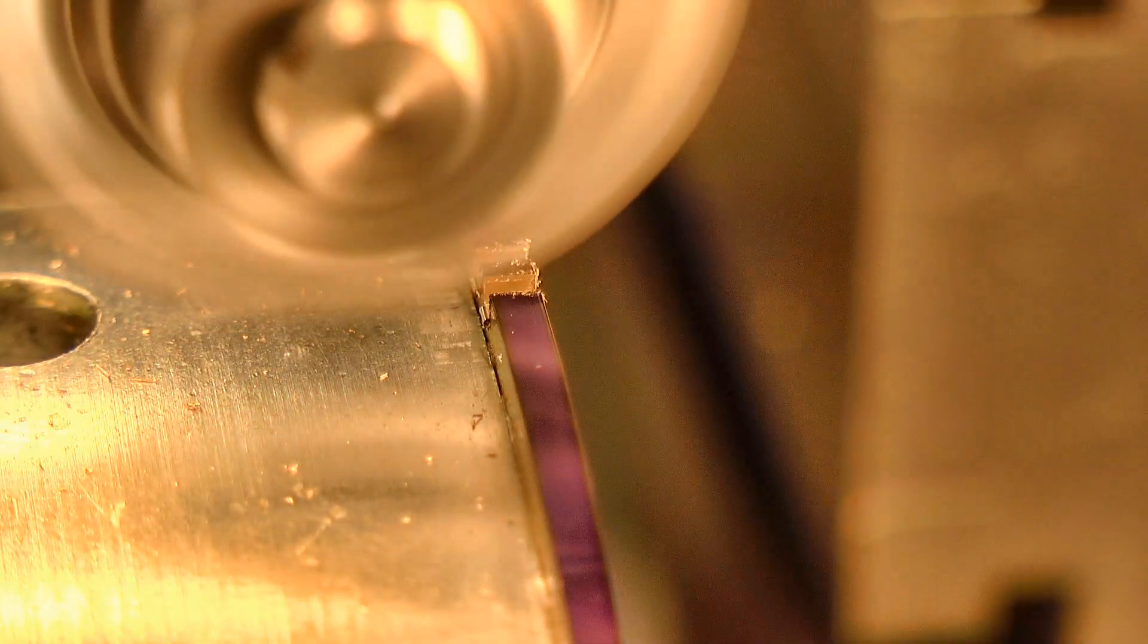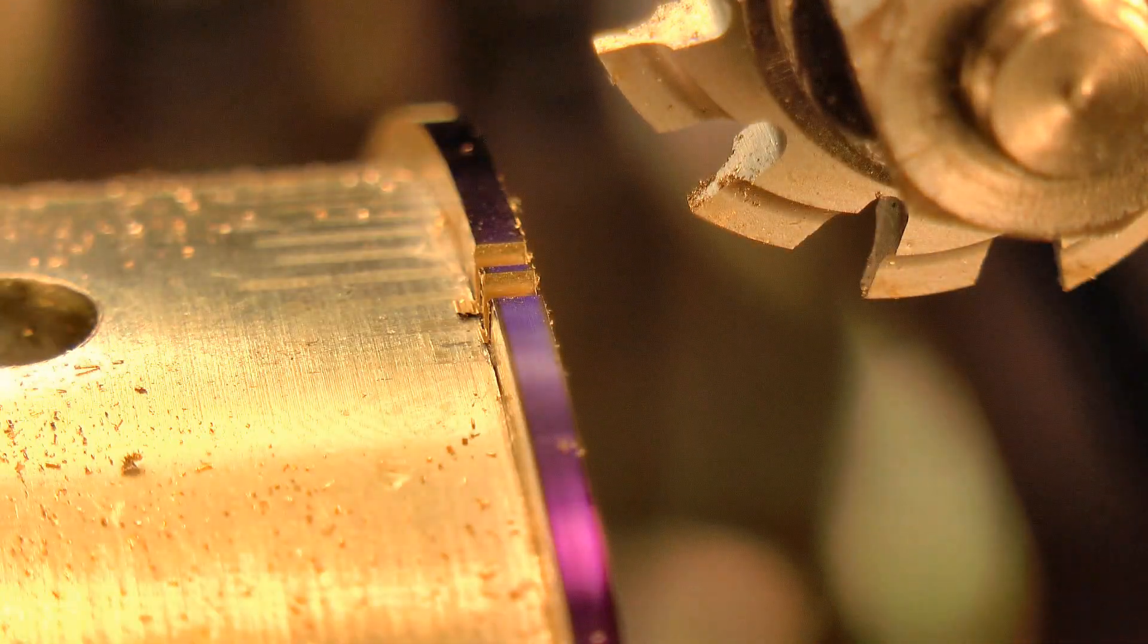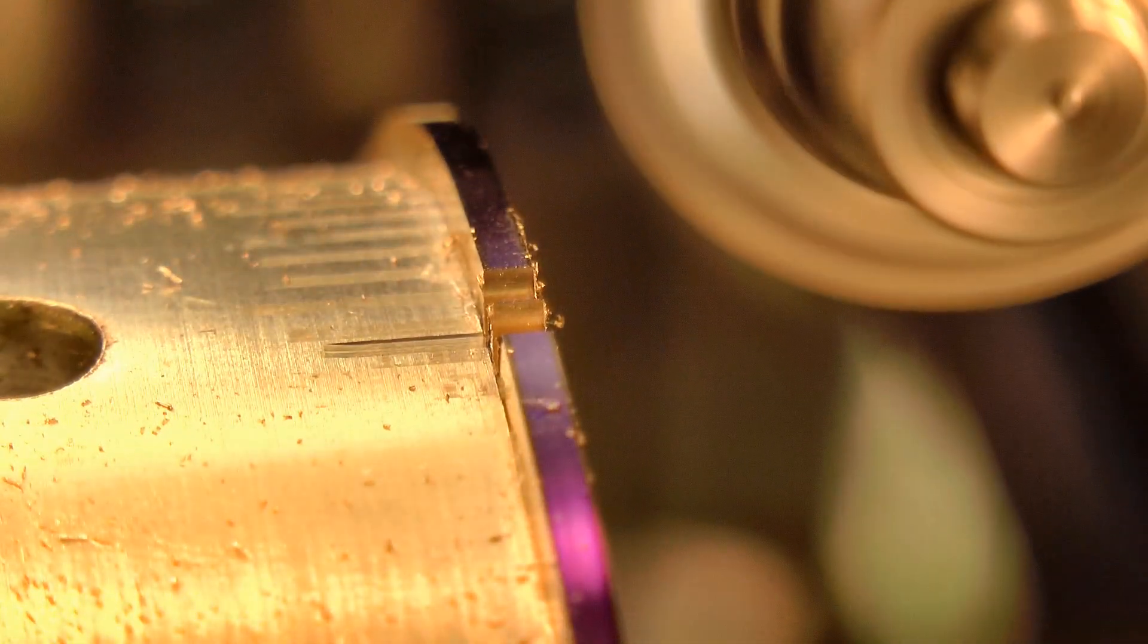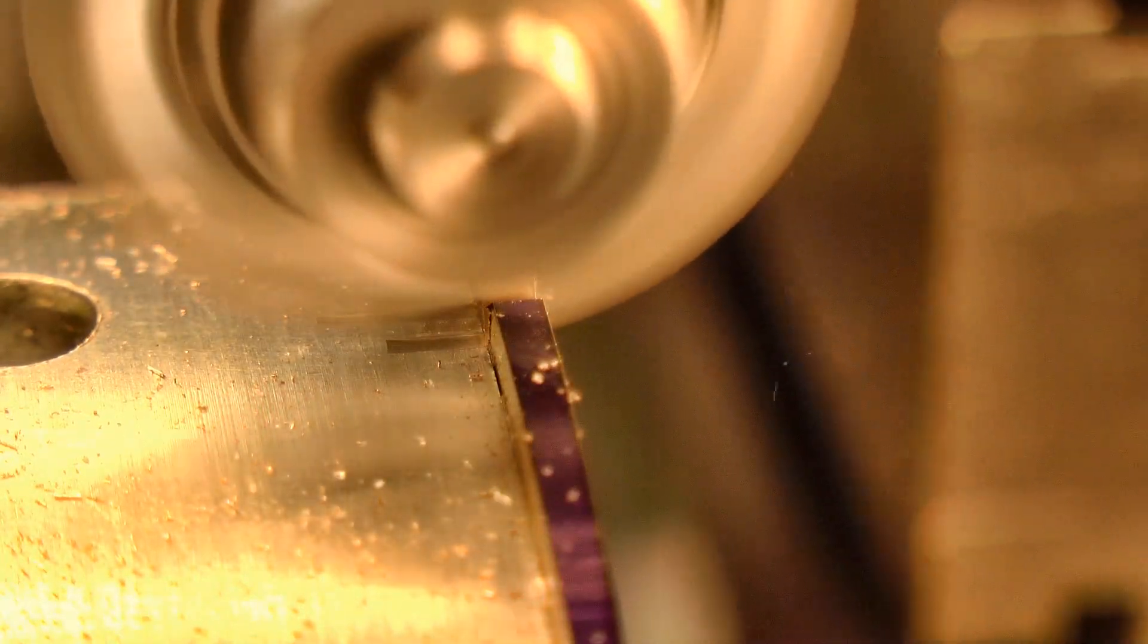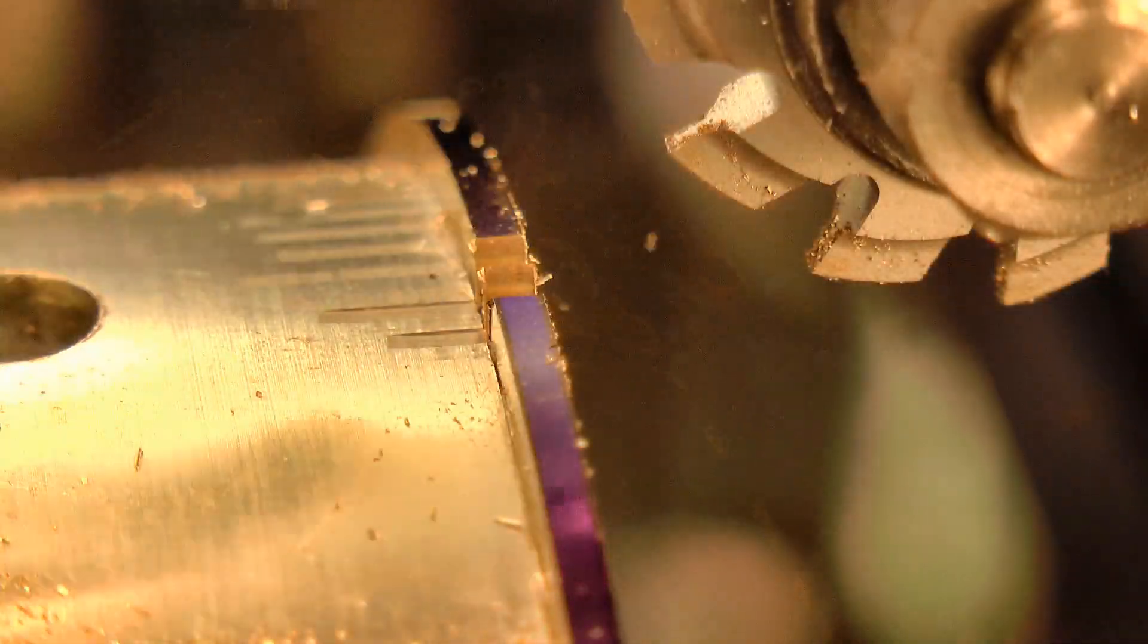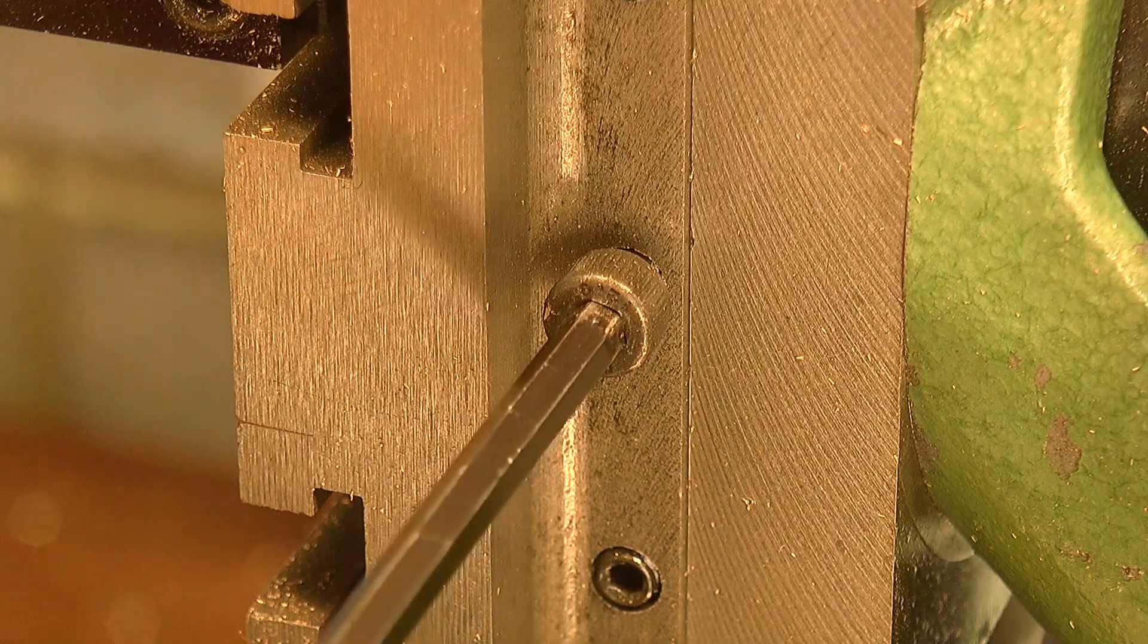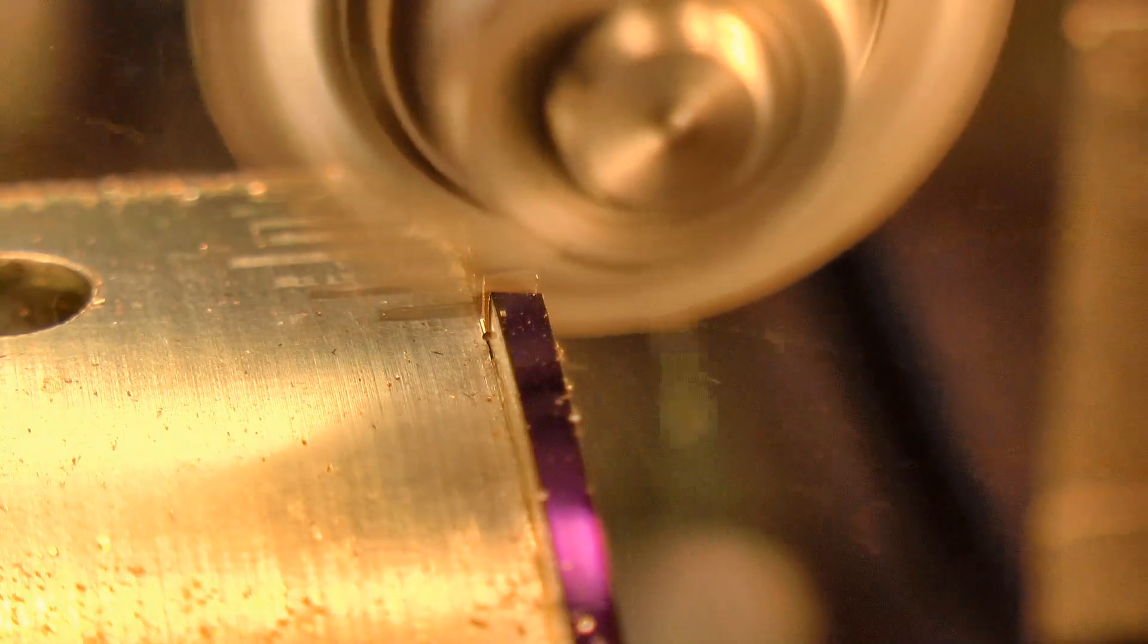The idea is to keep increasing the depth of cut until the blue in the middle just disappears. At that point the cutter is at the correct depth to form the teeth. The vertical slide is then locked, and then all of the teeth are cut in one pass.